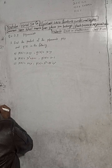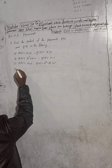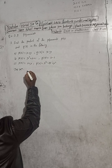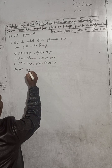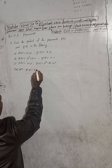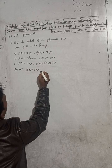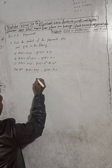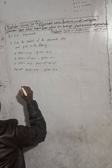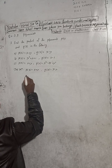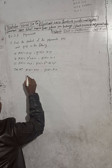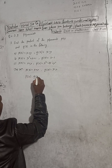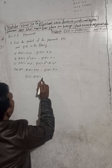3A solution: P(x) is equal to x plus y, and Q(x) is equal to x minus y. Find the product — product means multiply — P(x) into Q(x).